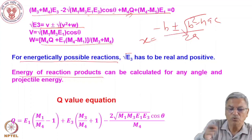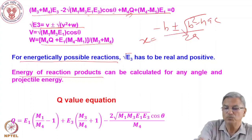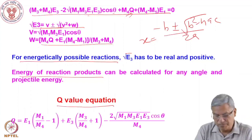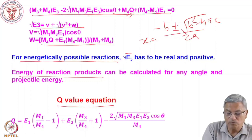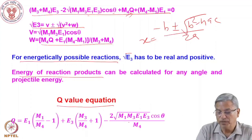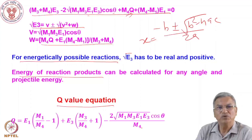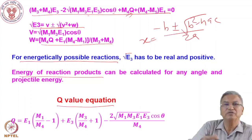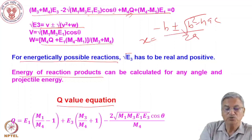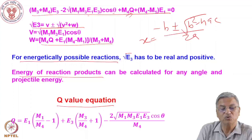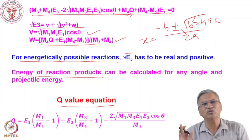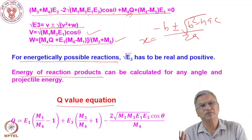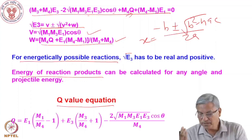You can also rearrange the equation in terms of the Q value — this is called the Q value equation. Q equals E1·(M1/M4 − 1) + E3·(M3/M4 + 1) − 2·root(M1·M3·E1·E3)·cos(theta) / M4. This Q value equation is the same relation in a different form. The solution again gives root(E3) = V ± root(V² + W), where V and W are given by the same expressions. This is the generalized solution of the Q value equation, valid for any type of reaction mechanism.